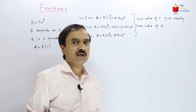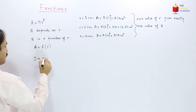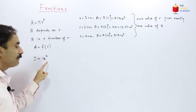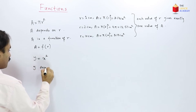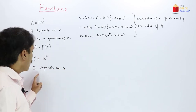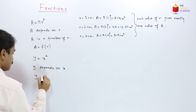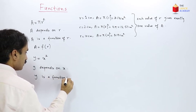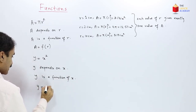Similarly, if we consider another equation, y equals x squared, again we can see that y depends on x. So here y depends on x, and we say that y is a function of x. Symbolically, we can write it as y equals f of x.